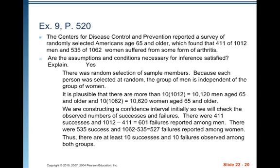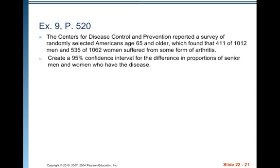Had we started off with a hypothesis test in the next step, we would have calculated the pooled proportion for the whole group together, and then double-checked that we were expecting at least 10 successes among women, 10 failures among women, 10 successes among men, and 10 failures among men. We're going to create a 95% confidence interval for the difference in proportions of senior men and women who have the disease.